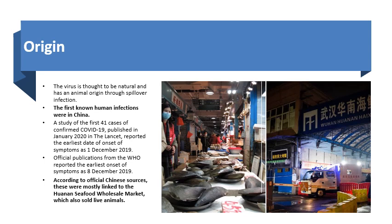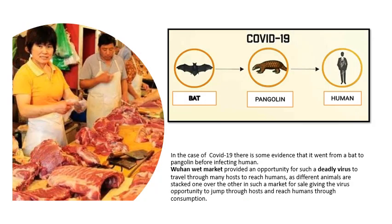The virus is thought to have originated in animals before infecting humans. The first known human infection appeared in China. According to official Chinese sources, these were mostly found in the Huanan Seafood Wholesale Market, which also sold live animals. The Wuhan wet market provided an opportunity for such a deadly virus to travel through many hosts to reach humans, as a result of stacking of different animals one over another for sale, giving the virus a passage to jump through the host to reach the human body via consumption. There is some evidence of the transmission of the virus from bats to pangolin before infecting humans.